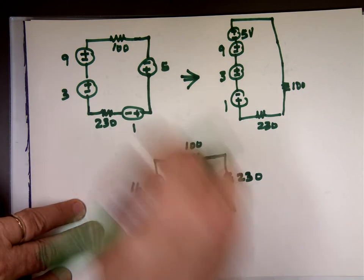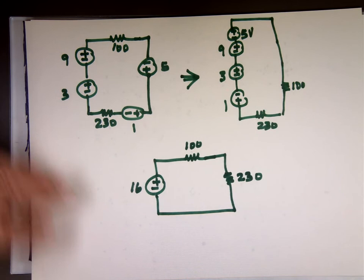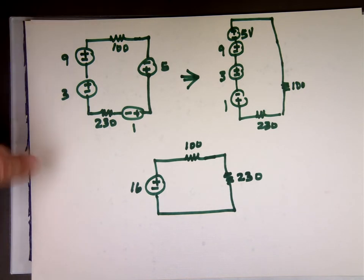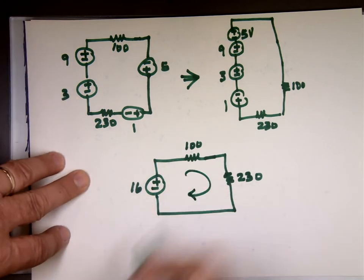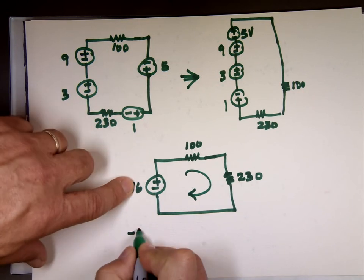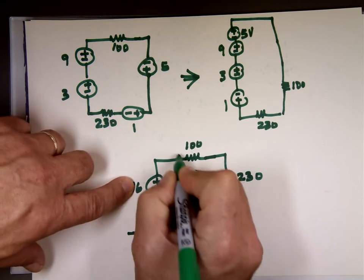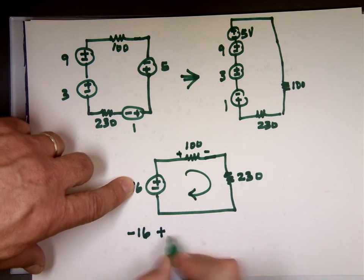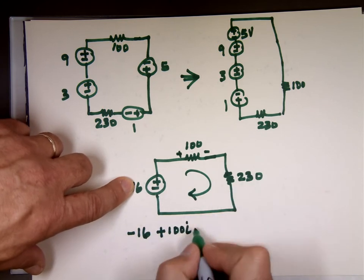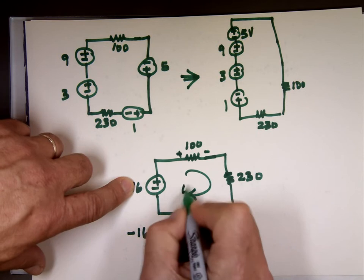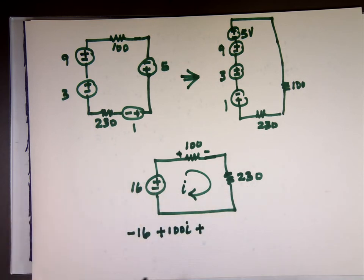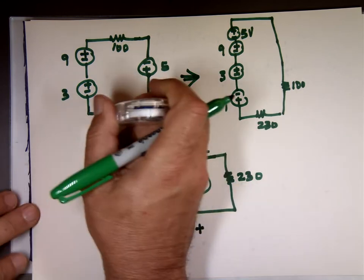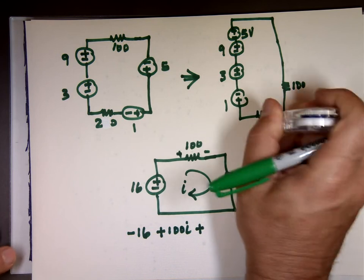And that becomes the equivalent of this one. This is equal to that. This is equal to this. This is equal to that. So now if I want to find the current through that, I'll do a one mesh equation. Let's do this. Negative 16 plus, because I'm going to mark this plus to minus, traveling this way. 100 I plus, this will be, how about make it 220. It will be a nicer number. Let's put 220 here. The number will be nicer.